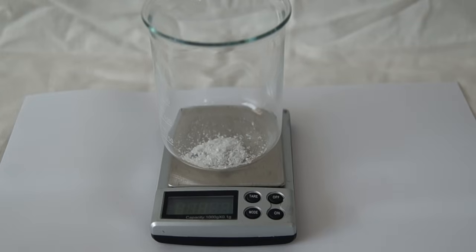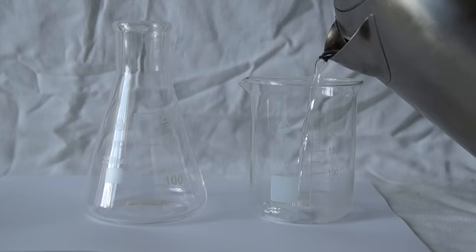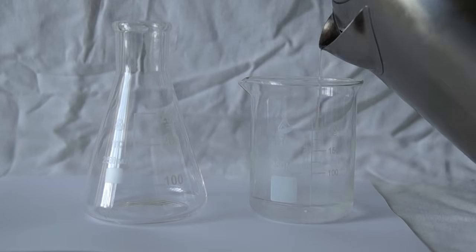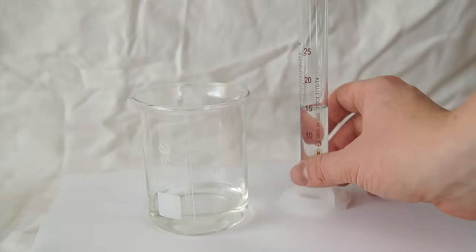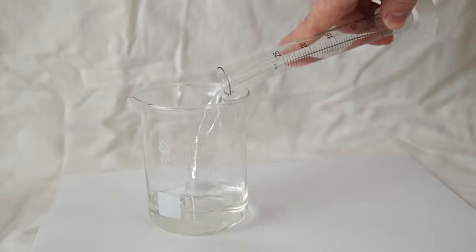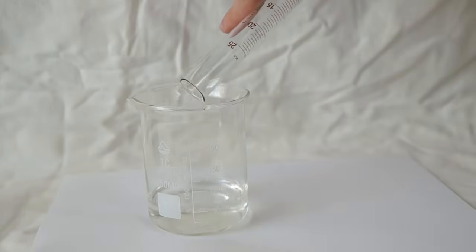To begin we need to weigh out approximately 2 grams of glucose and dissolve it with a small amount of hot water. Next we add 10 milliliters of sodium hydroxide to the solution of glucose.